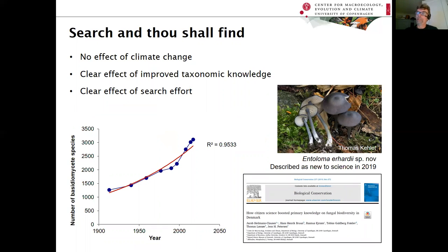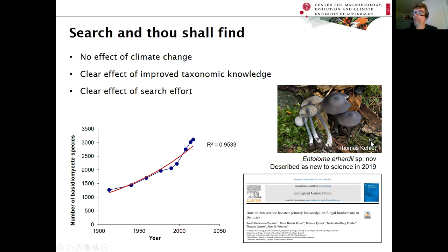We have published papers about the project, including a standalone paper describing how the project has improved knowledge about macro fungi in Denmark. The number of known species is just increasing over time and not leveling out yet, mainly related to improved taxonomic knowledge and a clear effect of more intensive searching. We even had species described as new to science based on our recordings, with a type specimen collected in Russia. This project shows that citizen scientists can really boost biodiversity knowledge even in one of the most well-explored and cultivated countries in the world.